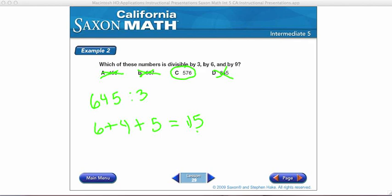576 is divisible by 3, by 6, and by 9. So, for problems J through O, you need to determine which numbers the number is divisible by. Is it divisible by 3? Is it divisible by 6? Is it divisible by 9? Is it divisible by just 1 or 2 of those? Or none of them?